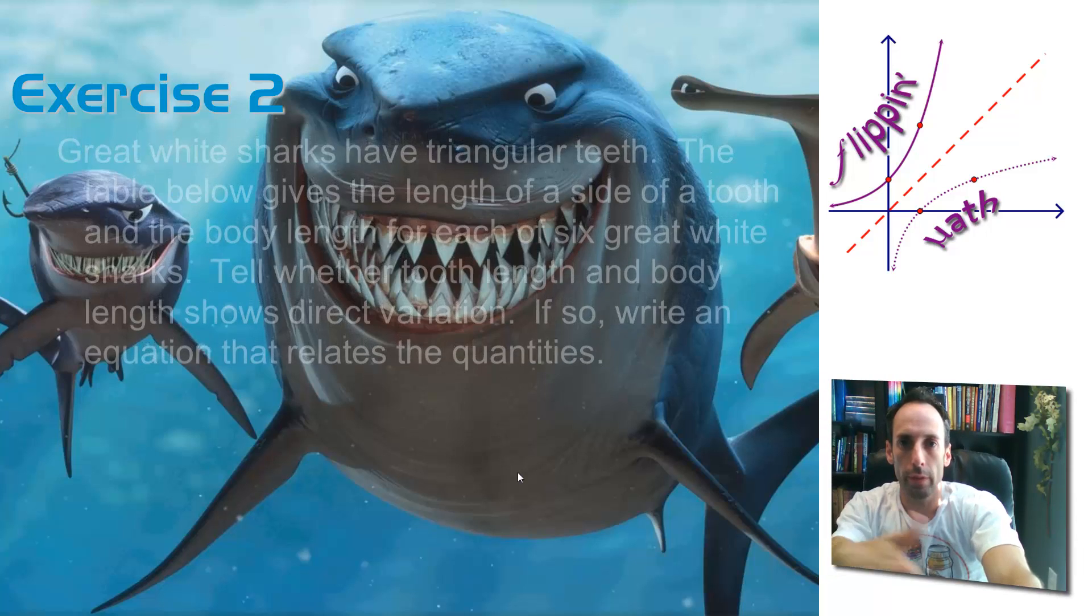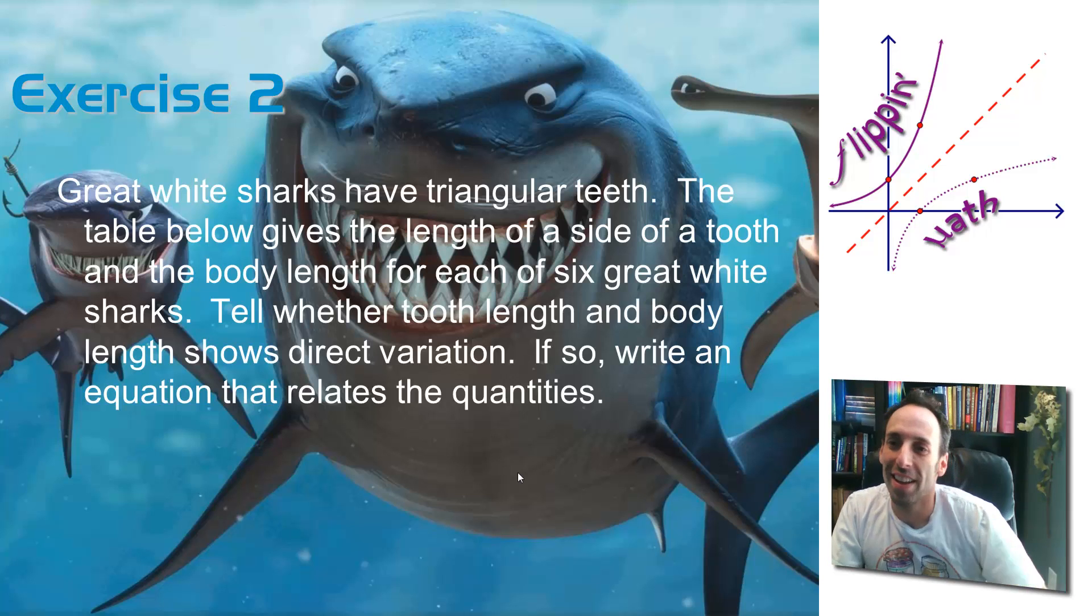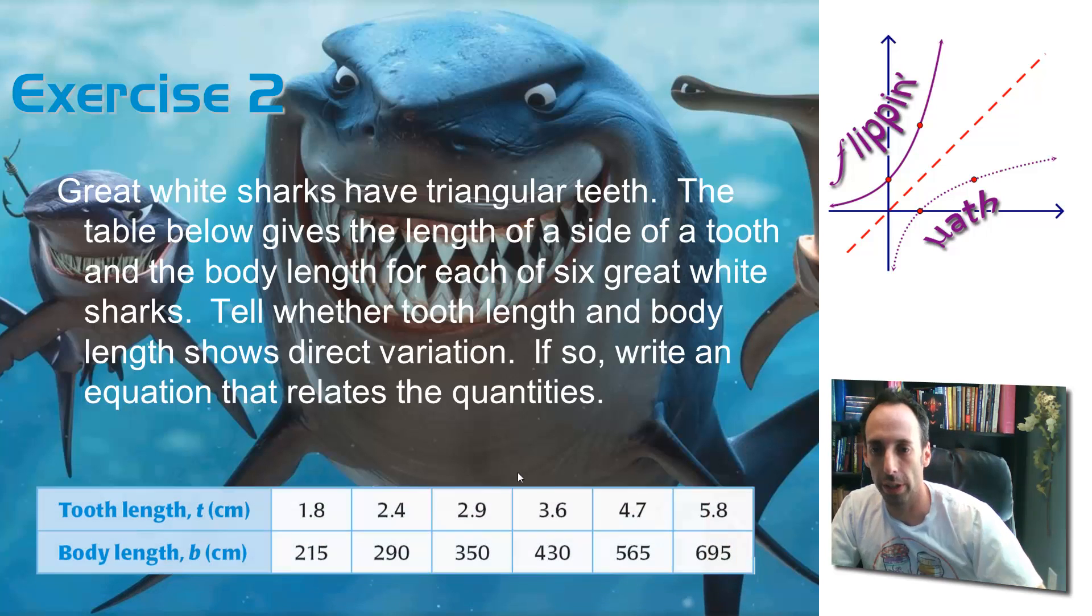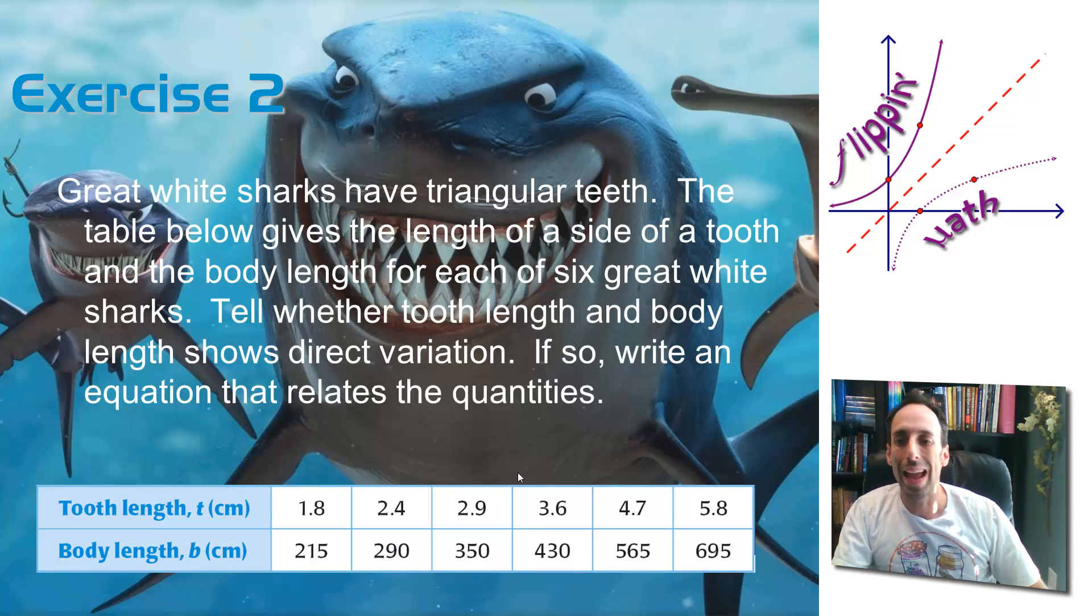So on exercise 2, you've got Bruce there. Hello, how about you, Mike? What's your problem? Bruce? Okay. So great white sharks have triangular teeth. The table below, let me show you that table, gives the length of the side of a tooth and the body length for each of six great white sharks. Tell whether the tooth length and body length show direct variation. If so, write an equation that relates these quantities.